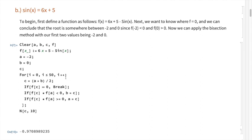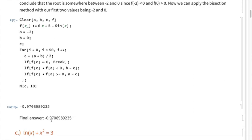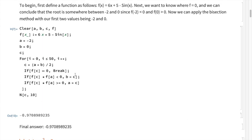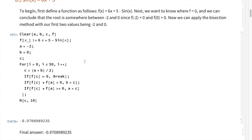Running these same four calculations again and again for 50 iterations, we evaluate the value of c out to 10 digits of precision and get a final answer of about negative 0.9708.